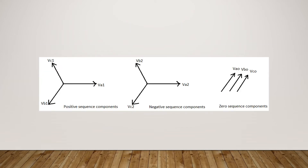Now collectively we can look at them in a single slide. This is how the positive sequence components are represented, and this is the negative sequence components representation.